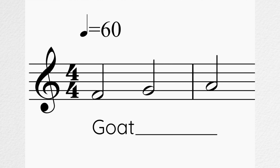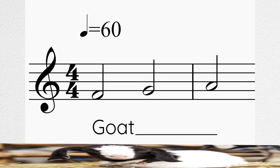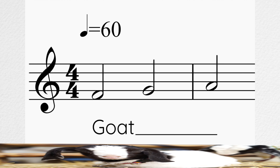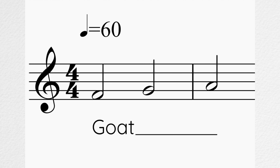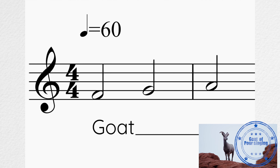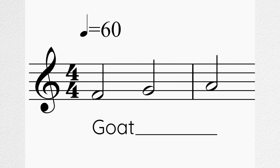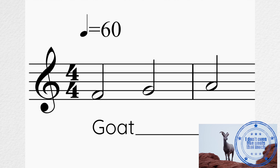This is called a melisma, and it is notated like this. The one-syllable word 'goat' is now stretched out over three different pitches. We can see the word has an underscore lasting for the duration of the sequence of notes. Here we would sound the consonant G and vocalise the vowel O on three pitches rising, then the final consonant at the end of the note. Goat.